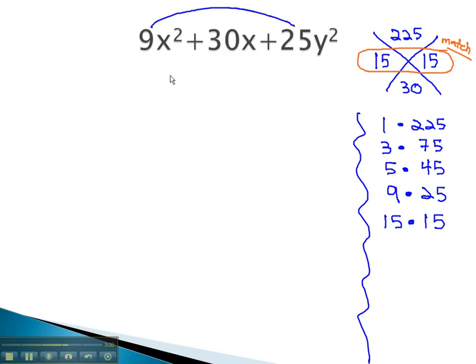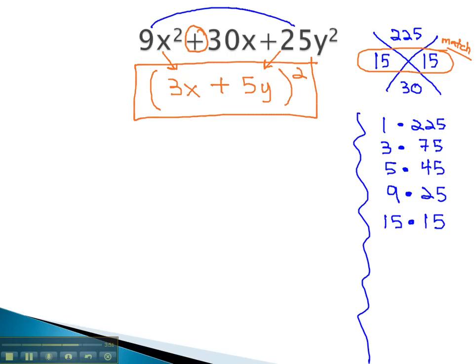When I see those numbers match, we no longer factor by the AC method, but instead jump straight to the factors. We fill in that perfect square by using the square roots of the first and last. The square root of 9x² is 3x. The square root of 25y² is 5y. Finally, the middle term tells us the sign that must go in the middle, a plus. And we now have factored to (3x + 5y)².